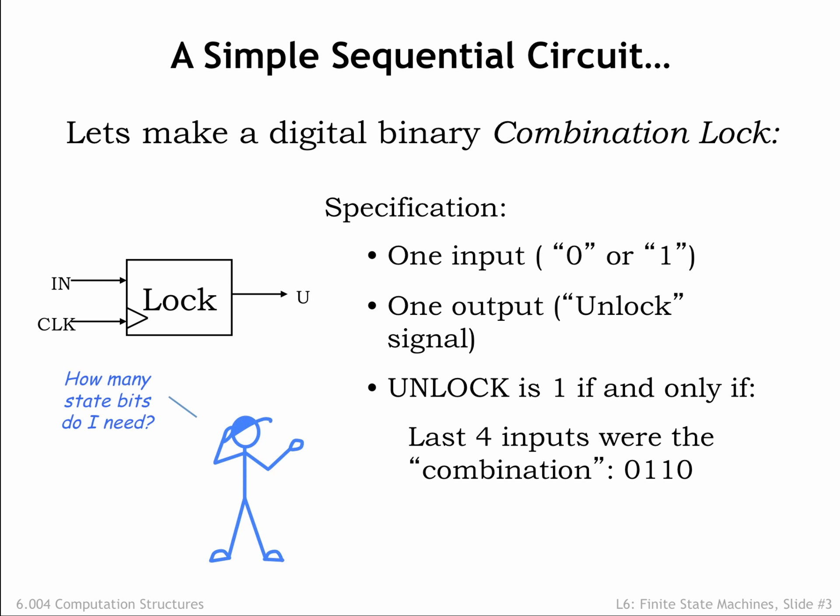How many state bits do we need? Do we have to remember the last four input bits, in which case we'd need four state bits? Or can we remember less information and still do our job? We don't need the complete history of the last four inputs — we only need to know if the most recent entries represent some part of a partially entered correct combination. If the input sequence doesn't represent a correct combination, we don't need to keep track of exactly how it's incorrect; we only need to know that it is incorrect.